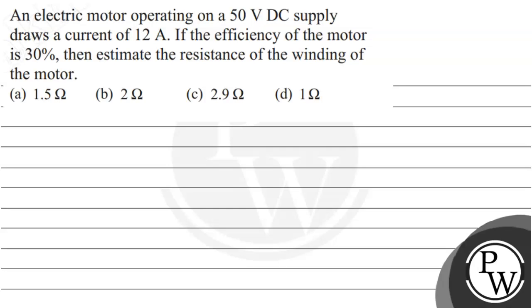Hello guys, let's read this question. An electric motor operating on a 50 volt DC supply draws a current of 12 ampere. If the efficiency of the motor is 30 percent, then estimate the resistance of the winding of the motor.